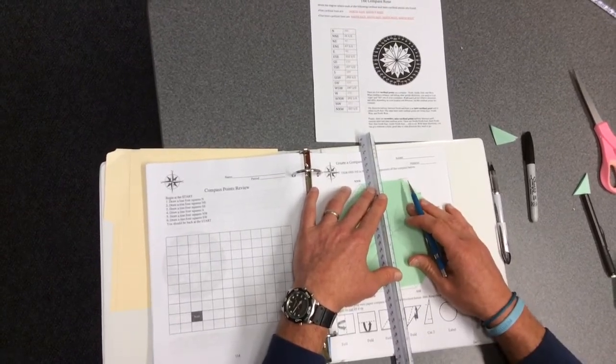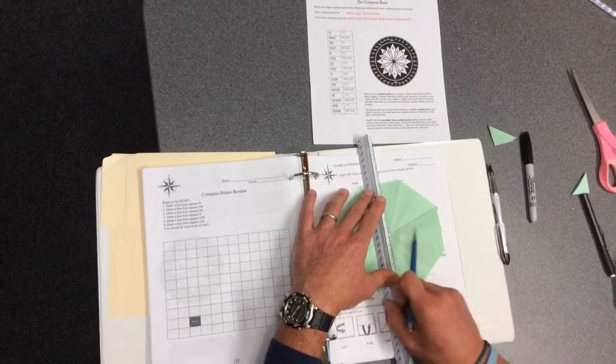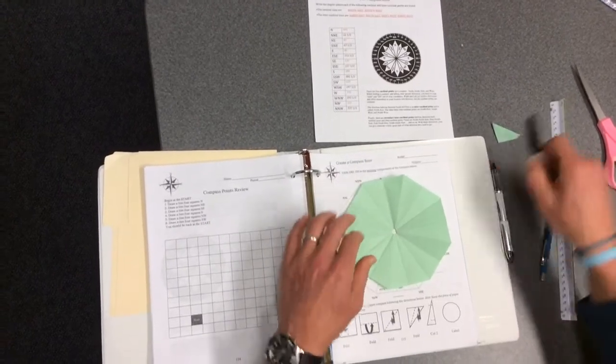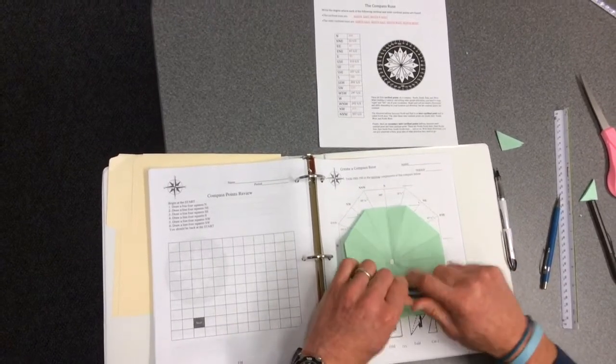Once you have your lines written on your compass rose, then you're going to line it up with your example and write in four directions.